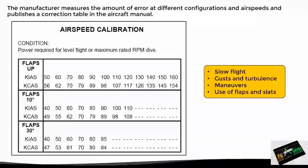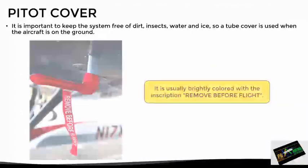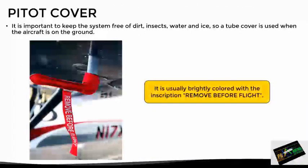With this being said, we finish with the pitot tube cover. It is important to keep the system free of dirt, insects, and water. So on the ground, a cover is used for this tube that is normally brightly colored and has the inscription 'remove before flight,' just to remind the pilot to remove this cover before flying, since otherwise there won't be any airspeed reading.